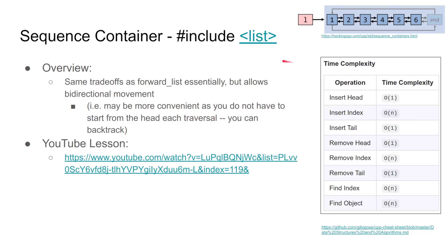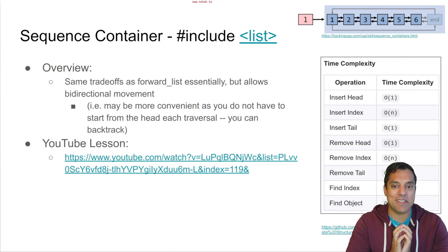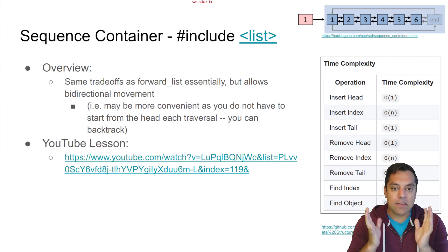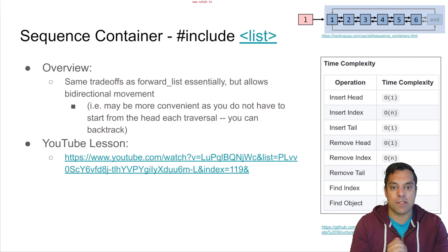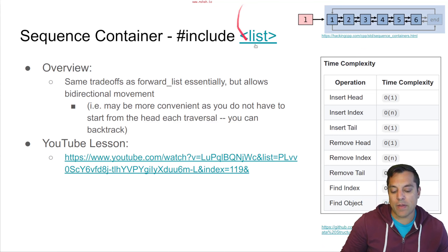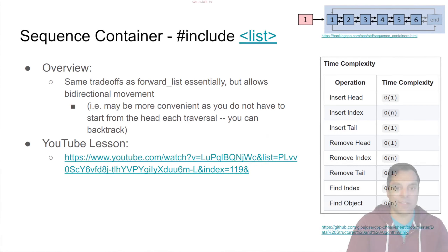We've had list for a long time in C++. It has the same essential trade-offs as forward list, but you get bi-directional movement because there's an extra pointer on each node, so you can move backwards. That's more convenient if you're iterating through data and want to walk backwards — like a linked list of calendar dates where you want to move to the previous or next event without restarting at the beginning. You can store a pointer to the middle of the list and move forward or backward. List data structures also allow for splicing, merging, and other pointer operations, making them the right choice for those use cases.